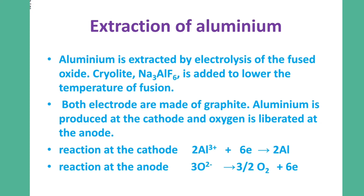Aluminium is produced at the cathode and oxygen is liberated at the anode. The cathode reaction is: 2Al3+ + 6e- → 2Al. The anode reaction is: 3O2- → 1.5O2 + 6e-, represented as 2O2- → O2 + 4e-.